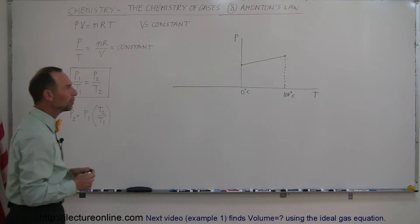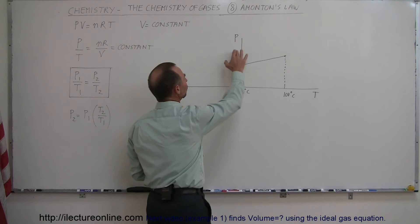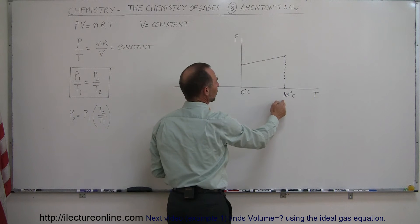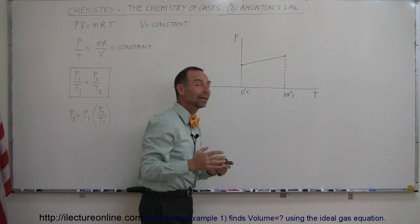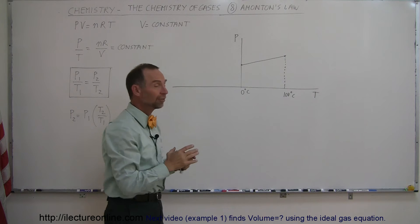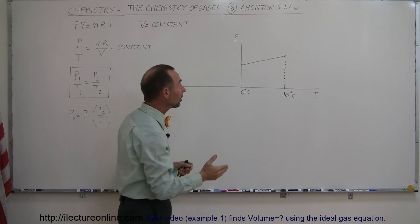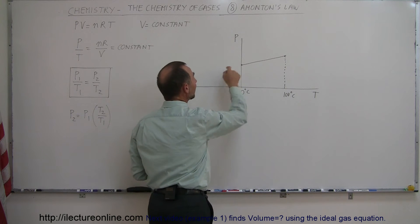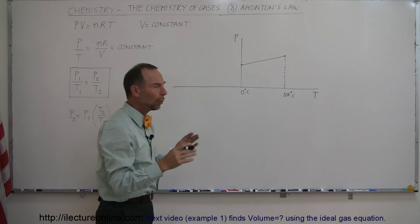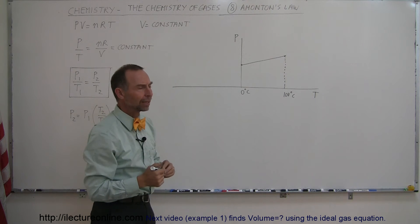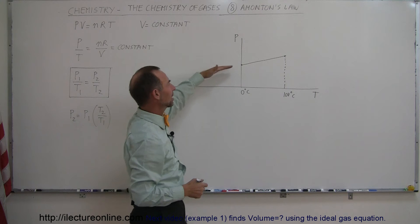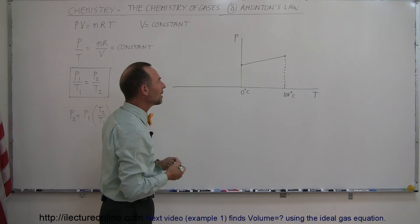They did this experiment where they measured the pressure of a gas at a particular temperature, let's say 100 degrees centigrade, and then measured the pressure again of the same gas with the same volume but now at a different temperature, and they got a different pressure. When they put that on the PT diagram, they got a straight line just like we have Y equals MX plus B.